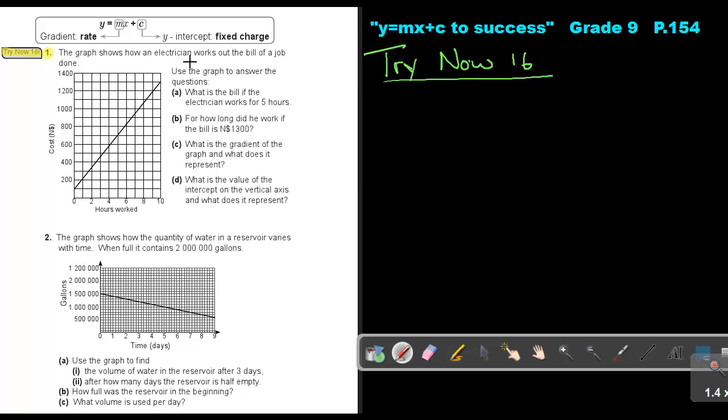So the graph shows how an electrician works out the bill of a job done. Use the graph to answer the question. So let's start with number A. What is the bill if the electrician works for five hours? So just go up there. So if it works for five hours, the cost is going to be, can you see? It's between 600 and 800, so it will be 700. That will be the cost.